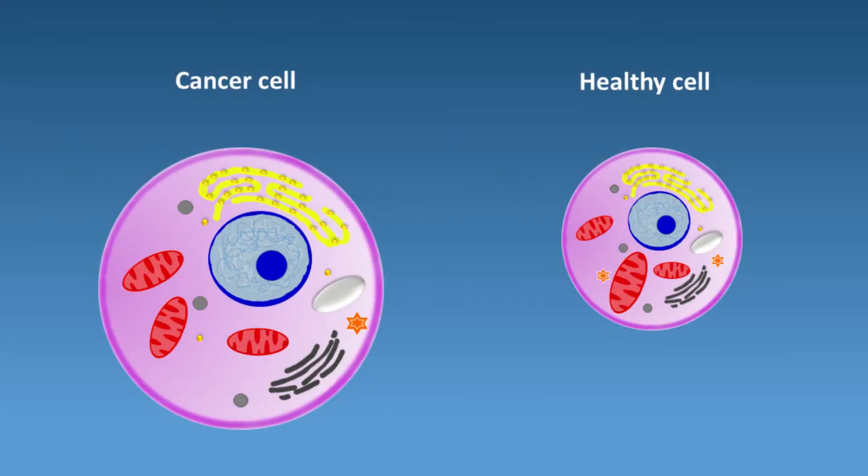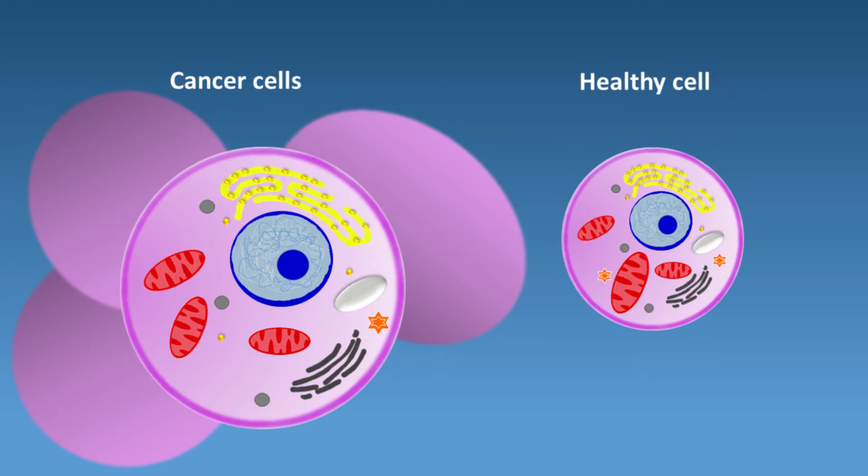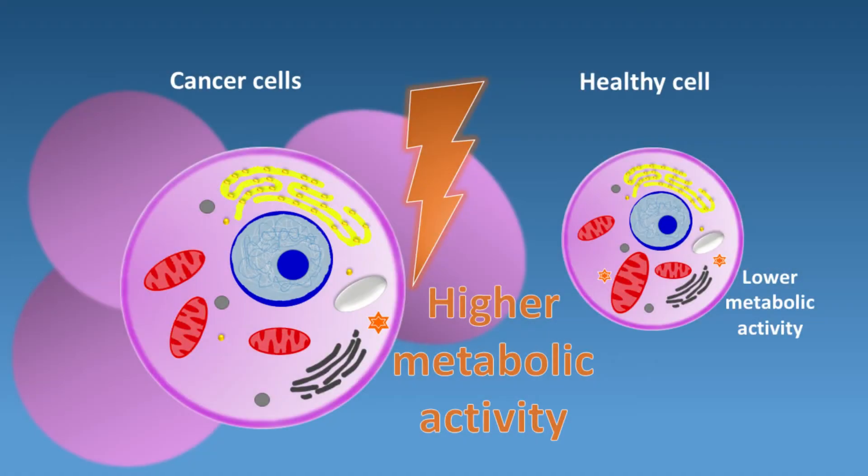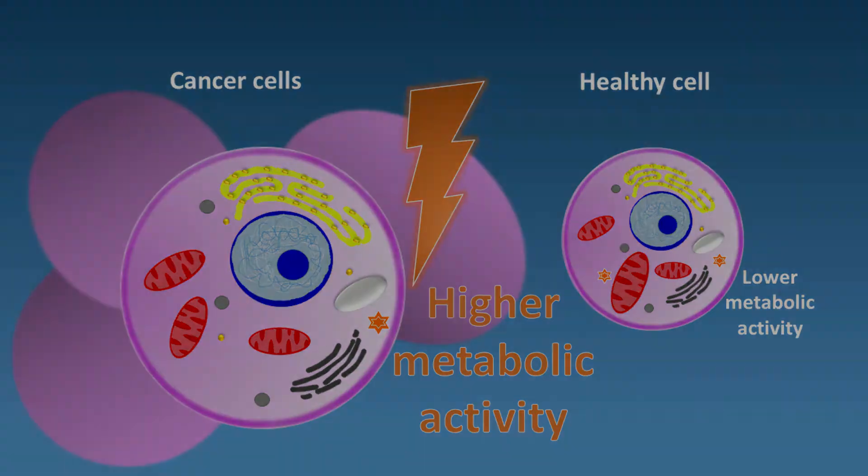Here we see a cancer cell on the left and a healthy one on the right. Cancer cells create tumours because they grow bigger and make copies of themselves a lot faster than healthy cells do. To make this possible, they need far more energy than healthy cells.